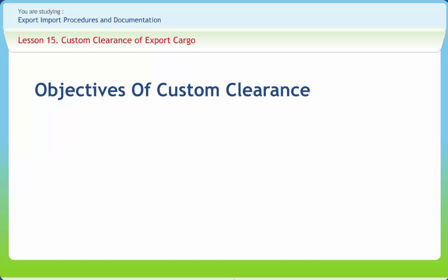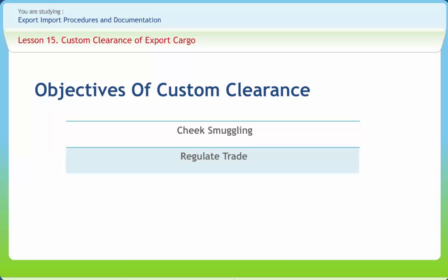Check smuggling: Those transactions which do not take place in accordance with provisions of different laws enforced in India amount to smuggling. It is the duty of customs administration to check such transactions. Regulate trade: Custom clearance helps in regulating trade in accordance with national objectives and policies. Violation of any provision of the Exim Policy as decided by the Ministry of Commerce is a violation under the Customs Act.